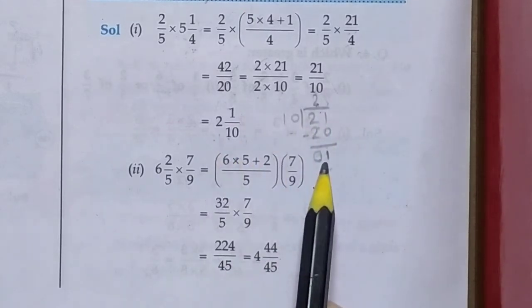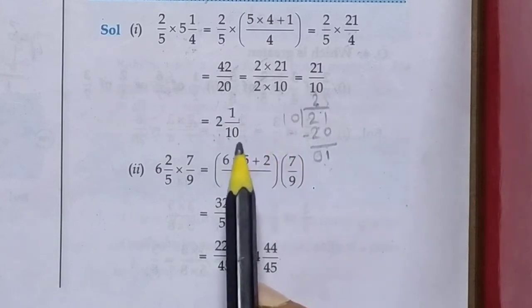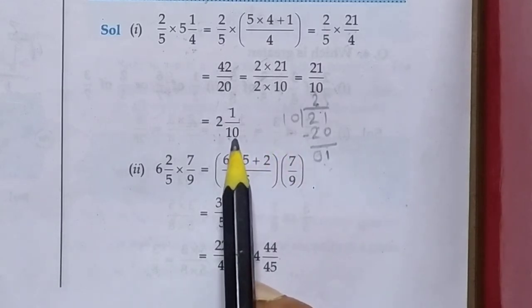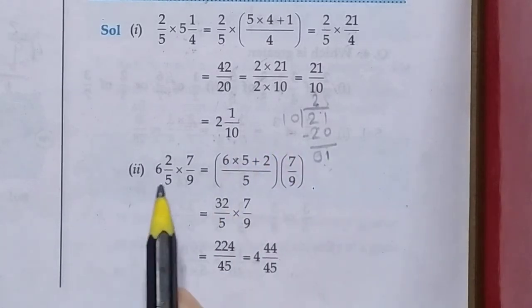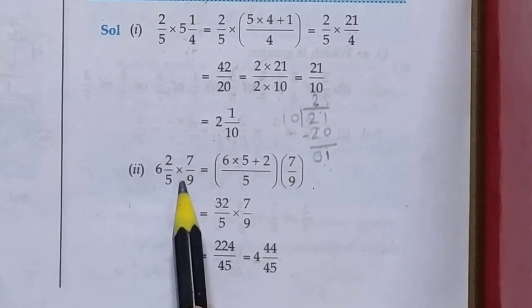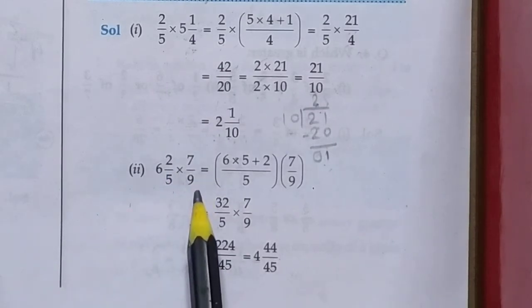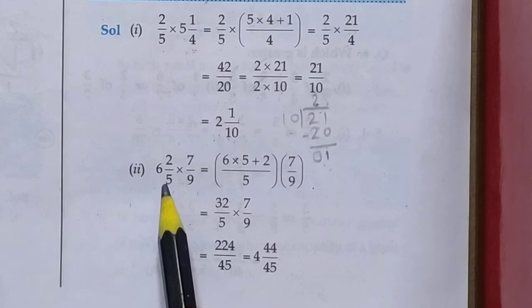Okay students, next, second problem: 6 whole 2 upon 5 multiply 7 upon 9. So students, first of all it is a mixed fraction, convert it into improper. 5 times 6 is 30, 30 plus 2 equals 32. So 32 upon 5 multiply 7 upon 9.